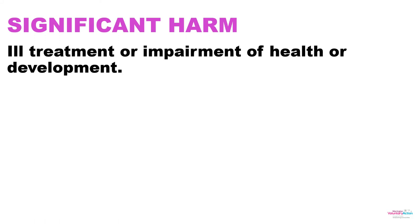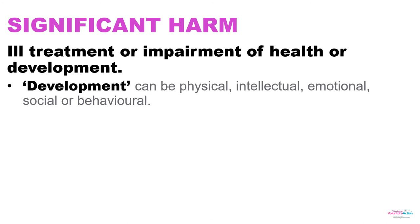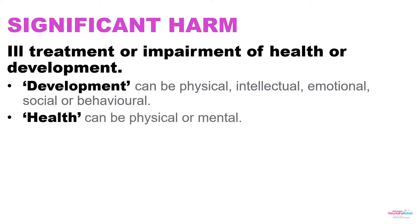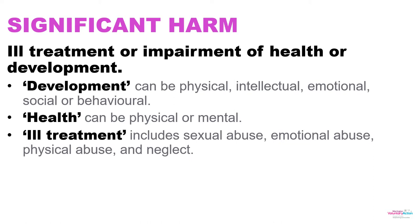Child safeguarding comes with an interesting term that's usually attached to children, but I think is really helpful when thinking about adults too: the concept of significant harm. A child is said to have experienced abuse or challenge if they've experienced significant harm — meaning ill treatment or impairment of health or development. Development can be their physical development, growth, intellectual, emotional, social, or behavioural. Health is either physical or mental. Ill treatment includes the four types of abuse we attach to children and young people: sexual abuse, emotional abuse, physical abuse, and neglect.